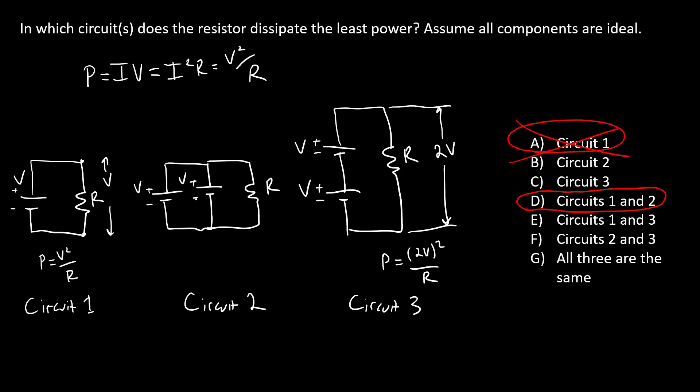And the mistake a lot of students make is they see this circuit and see, oh, it has more batteries. So there must be more power, right? But these batteries were added in parallel. And that does not change the voltage drop across the resistor. The voltage drop across the resistor in this case is still just V. Doesn't matter how many batteries I add in parallel here.